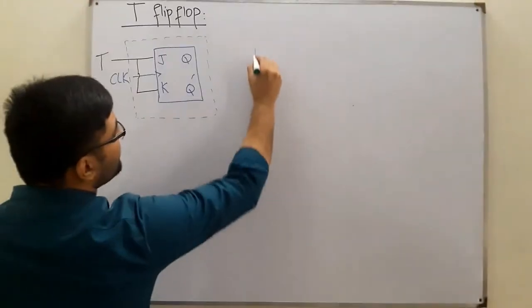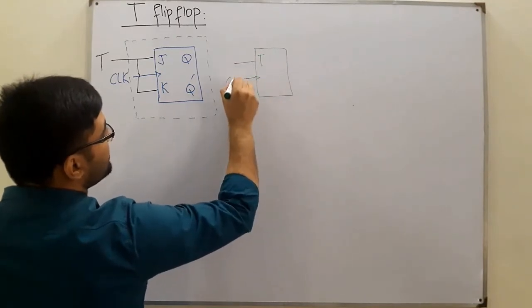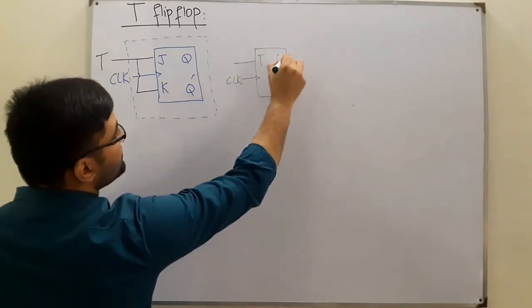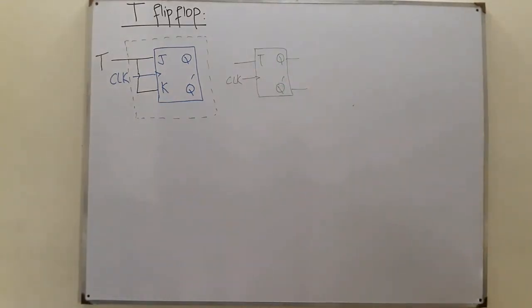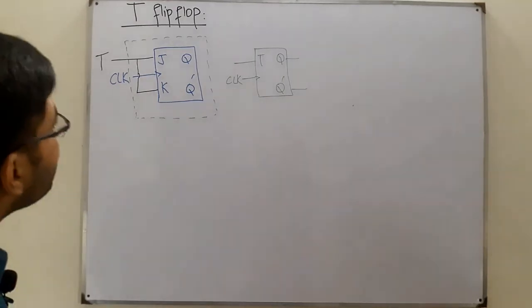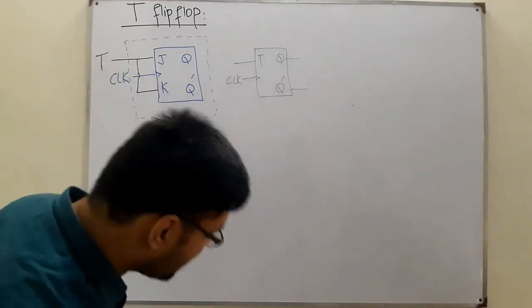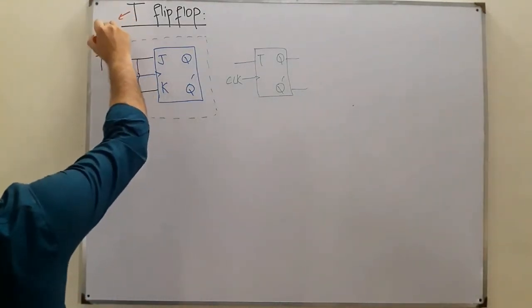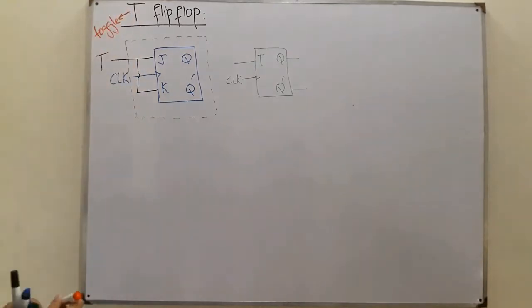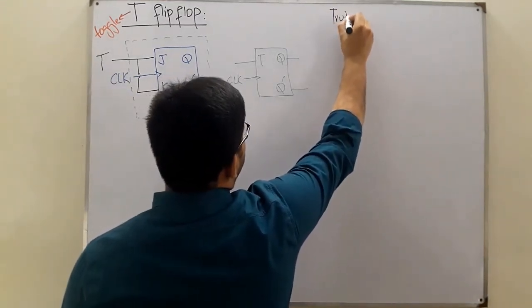The T flip-flop has input T, a clock source, output Q and Q-complement — that is how it is obtained. Now we draw the truth table. In the JK flip-flop we had the toggling action, and this T flip-flop is also mostly used for the toggling action. T stands for toggle. This flip-flop is all about toggling.